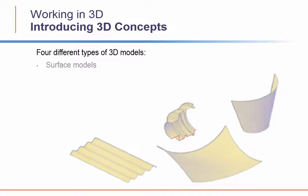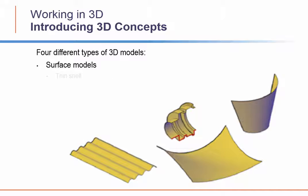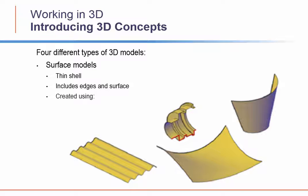Surface models represent an infinitely thin shell that corresponds to the shape of a 3D object. Surface models consist of both edges and the surfaces between those edges. You can create surface models by using specific surface modeling commands, or by sweeping, lofting, and revolving two-dimensional objects such as lines and arcs.